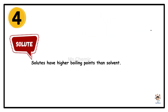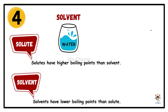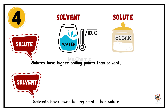Fourthly, solutes have higher boiling points than solvents, while solvents generally have lower boiling points than solutes. For example, the boiling point of water is 100 degrees Celsius, while the boiling point of sugar is 102 degrees Celsius.